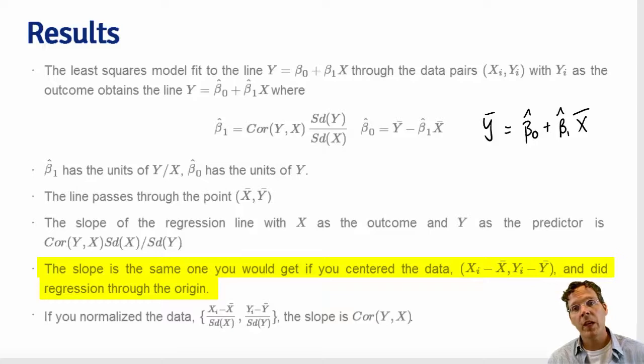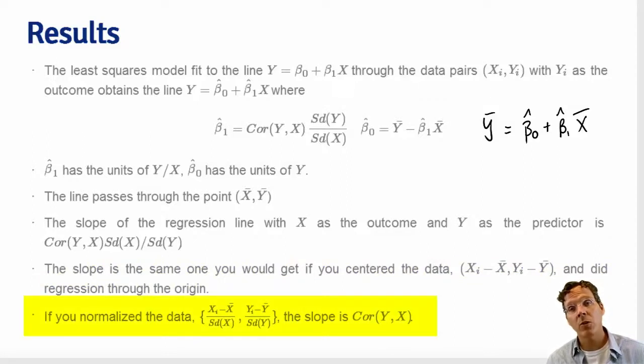The slope is the same if you were to center the data first. In other words, take each xi and subtract off its average, take each yi and subtract off its average so that now the origin is exactly the mean of the data. If you were to do regression forcing the line through the origin, you get the same answer. I would also note that if you normalize the data, don't just center it, but center it and scale it, the slope is exactly the correlation because the standard deviation of the x variable is 1, the standard deviation of the y variable is 1, and so the slope will just be the correlation.